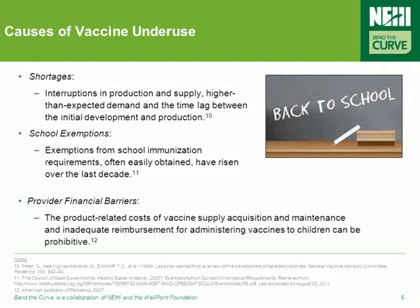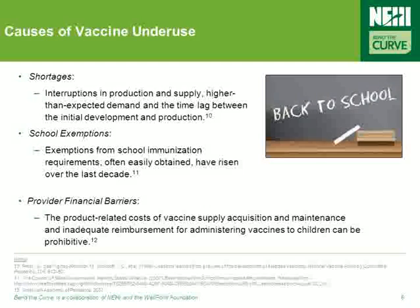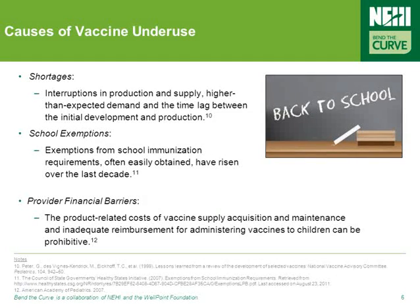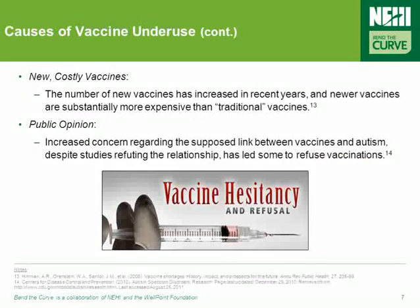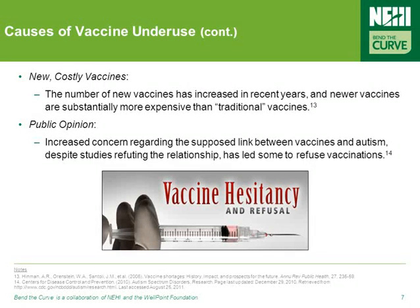Shortages occur due to interruptions in production, supply, and the time lag between initial development and production. Exemptions from school immunization requirements are often easily obtained, and inadequate reimbursement for administering vaccines to children can be cost-prohibitive for many physician practices. In addition, newer vaccines, which have been increasing in recent years, are substantially more expensive than traditional vaccines, and increased concern regarding the supposed link between vaccines and autism — despite many studies refuting a relationship — has led some parents to refuse vaccinations.